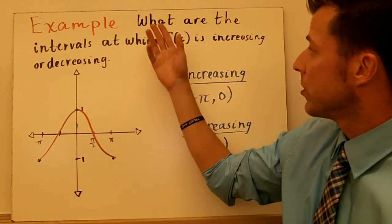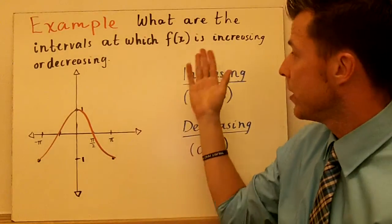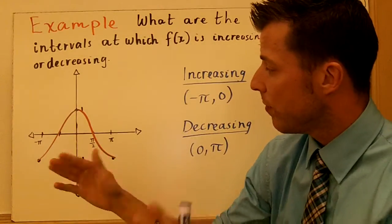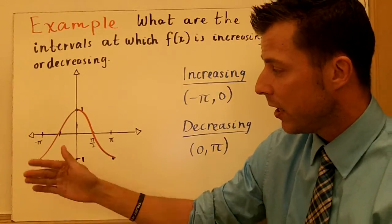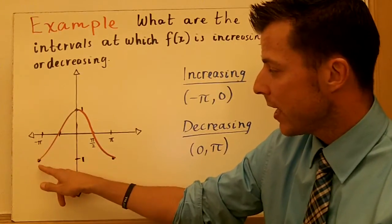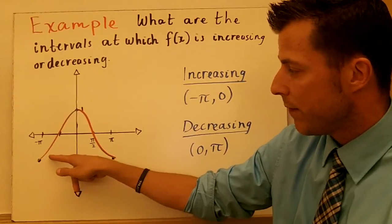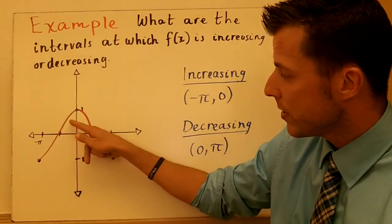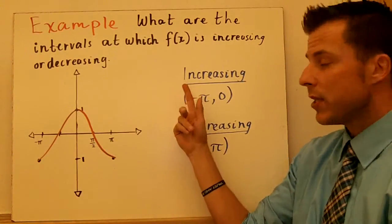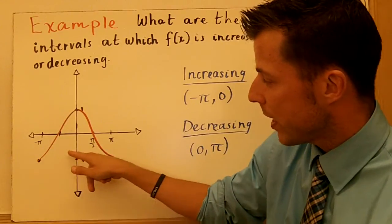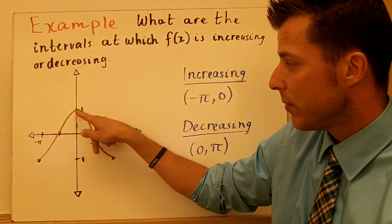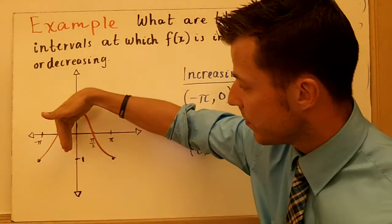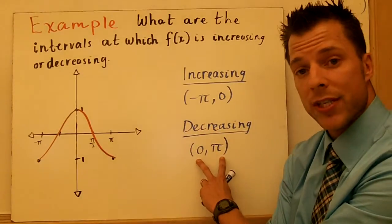Here we're looking at part of the cosine function. We want to know the intervals at which the function is increasing and decreasing — I'm not going to include constant here because I don't see anything flat on the graph. The domain goes from negative pi to pi. Starting on the left at negative pi, as I increase my value of x, the function also increases all the way until x is 0 — so the interval is increasing from negative pi to 0. Be careful: don't say negative pi to 1, because 1 is the y value. The decreasing portion is from 0 to pi.